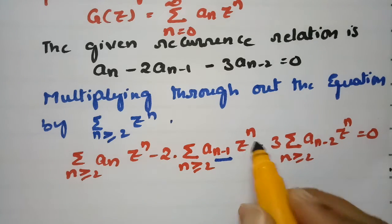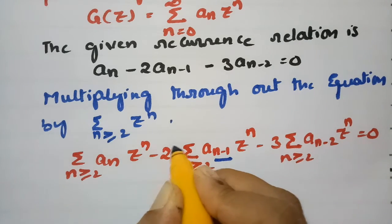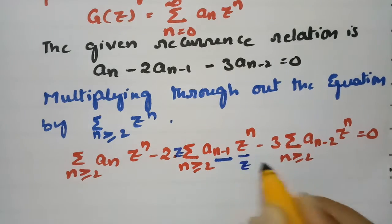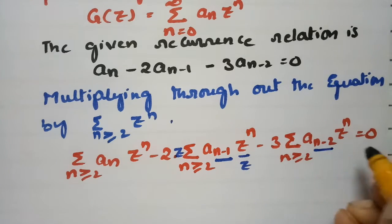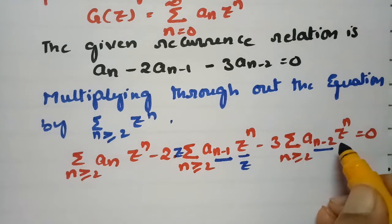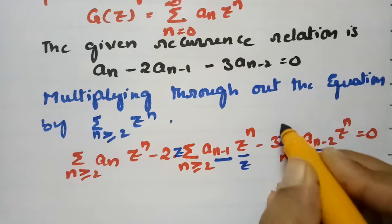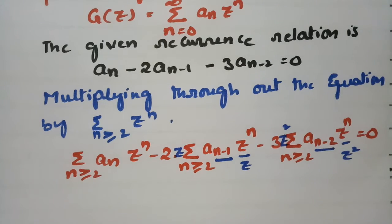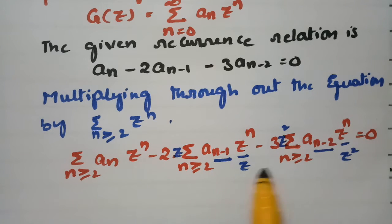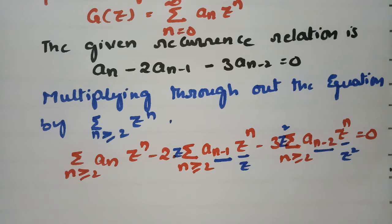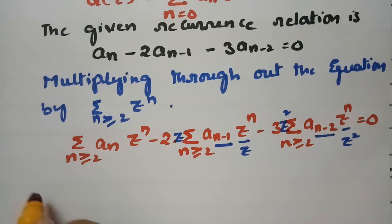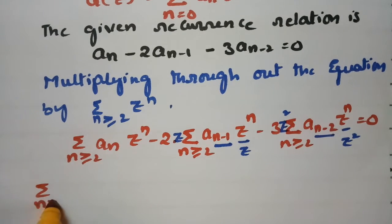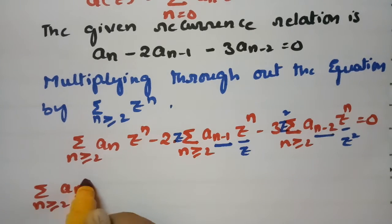In order to balance the n minus 1 term, I am multiplying and dividing by z. For the n minus 2 term, I am multiplying and dividing by z squared. This way the exponents align with the generating function definition.